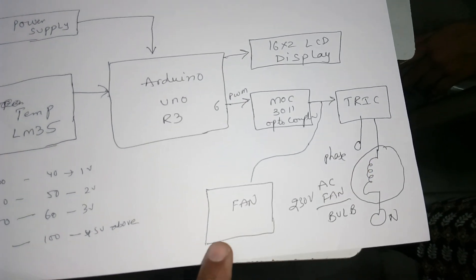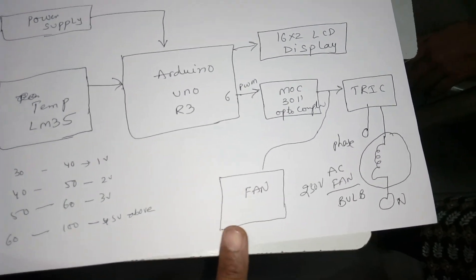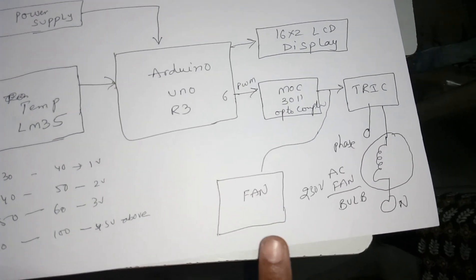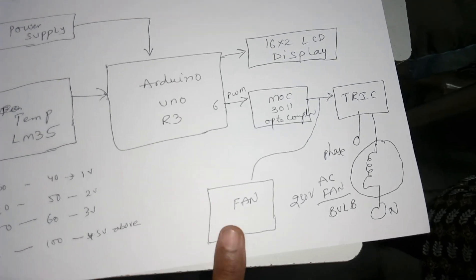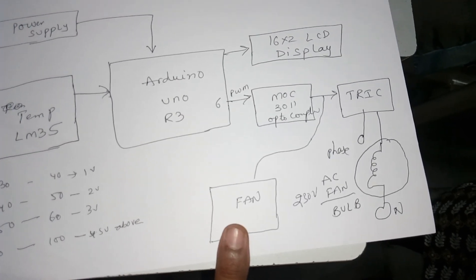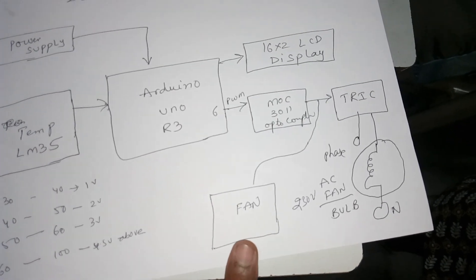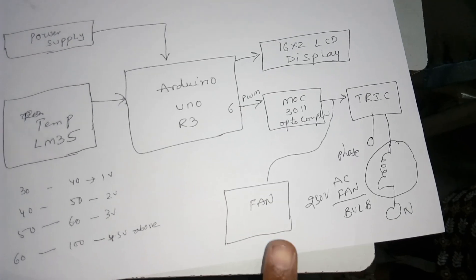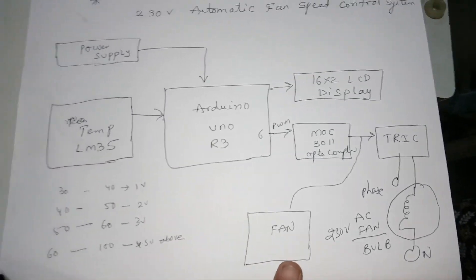For output demonstration we are showing the result with a 12-volt AC motor, not a simple computer motor. We are showing the motor running at differential speeds by giving differential output values.